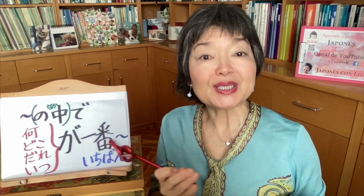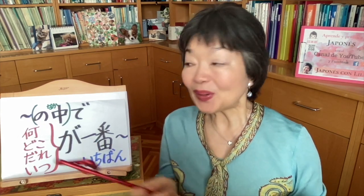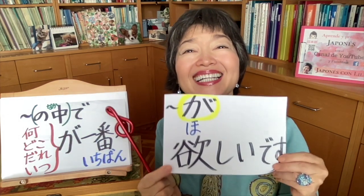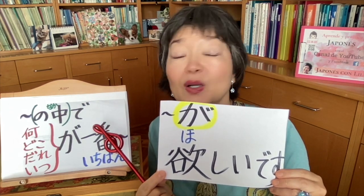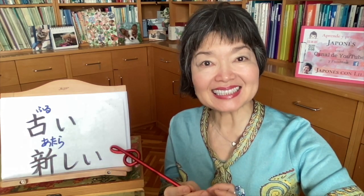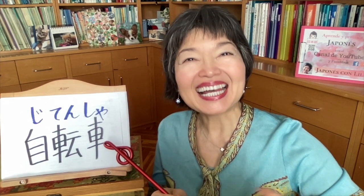'What do you want the most?' This is the superlative. We use 一番 (ichiban) before the adjective. So: 何 が 一番 ほしいですか (nani ga ichiban hoshii desu ka) — 'What do you want the most?' A possible answer: 新しい 自転車 が ほしいです (atarashii jitensha ga hoshii desu) — 'I want a new bicycle.' 自転車 (jitensha) = bicycle.